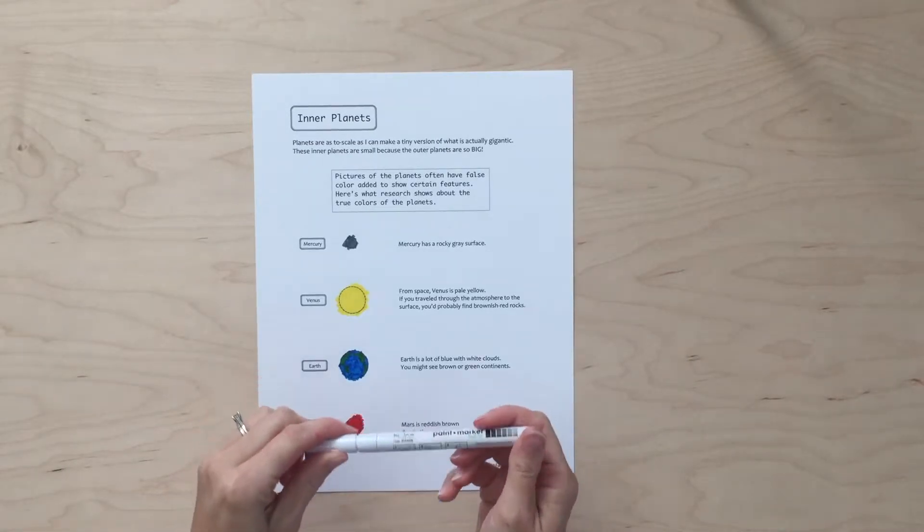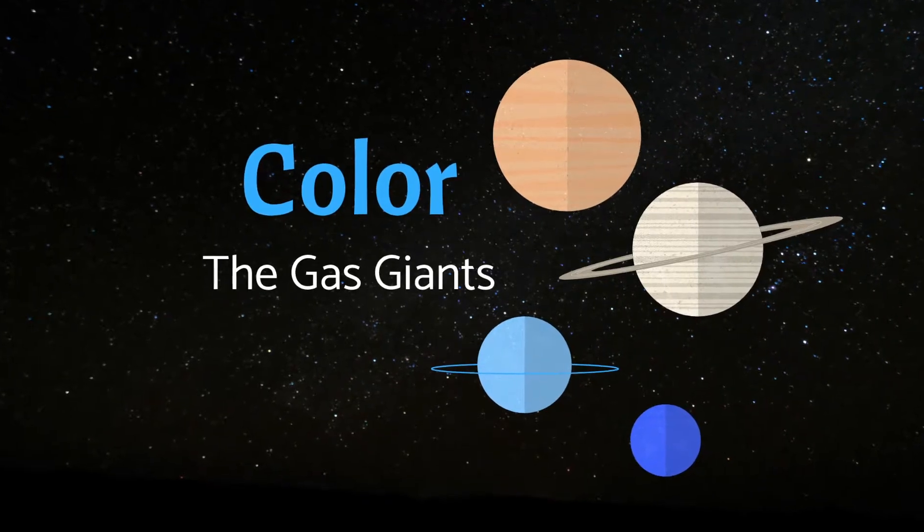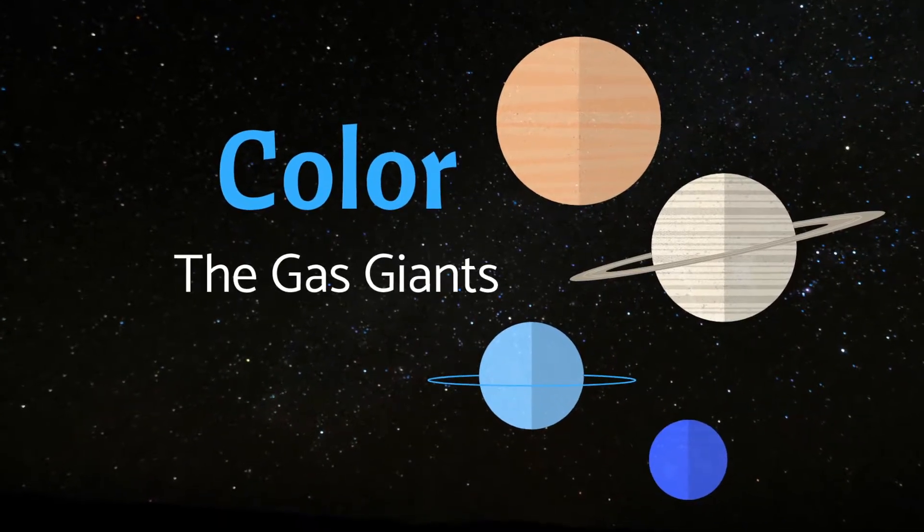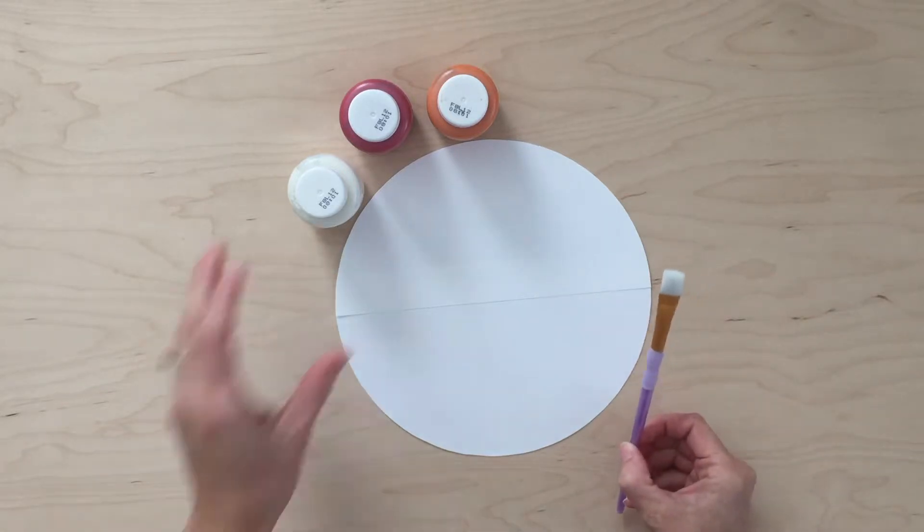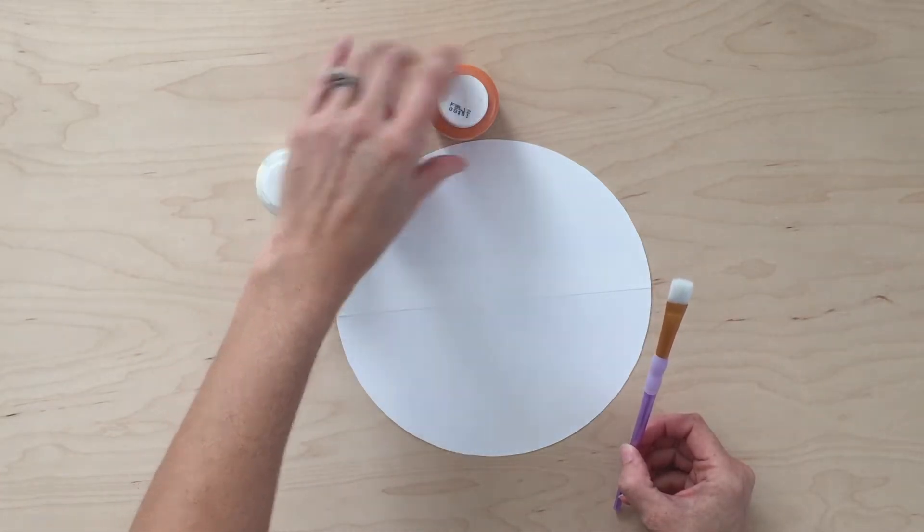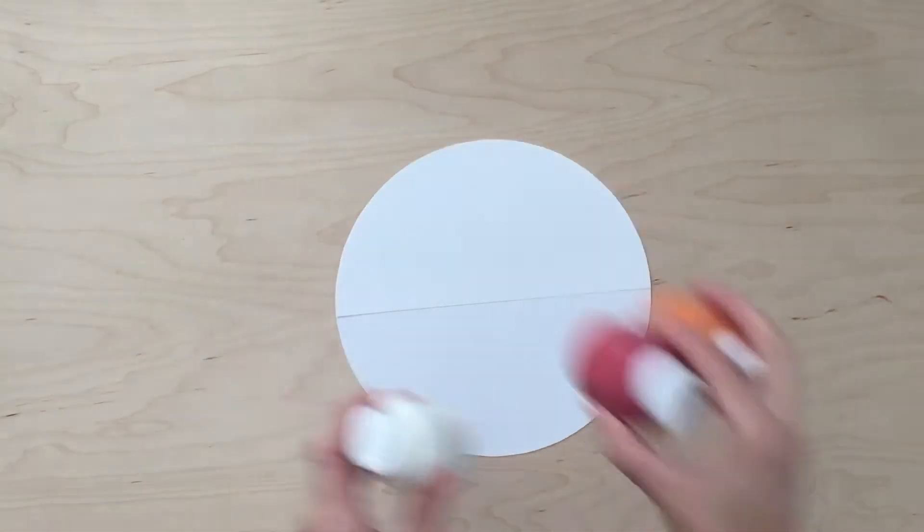I have this paint marker I thought I might try to make some white clouds with on Earth. Jupiter, Saturn, Uranus, and Neptune are the outer planets. They're called the gas giants. I think it would be really cool to paint those, but since I've already started with marker, I'm going to go ahead and continue with marker.